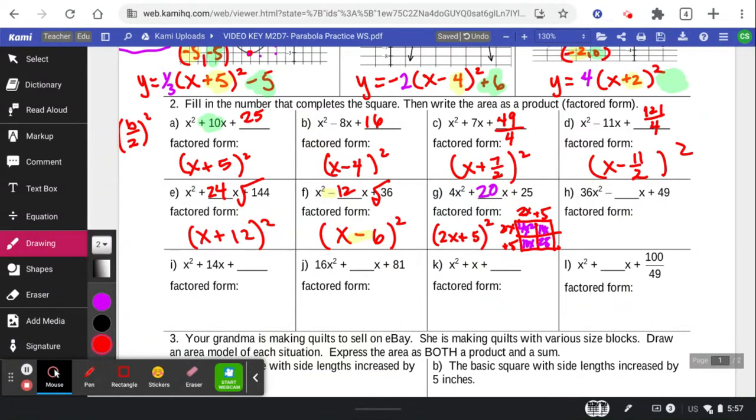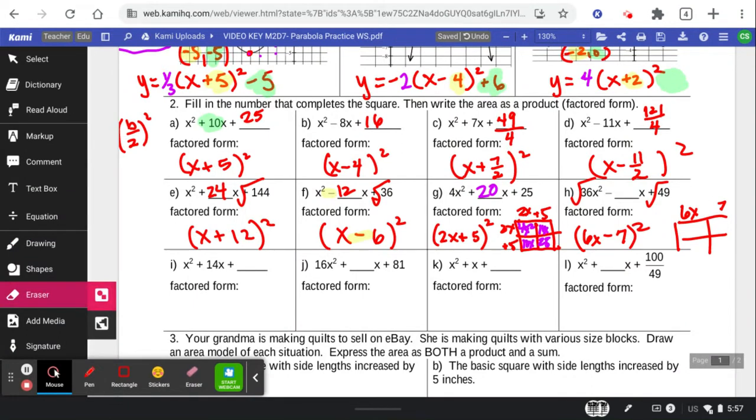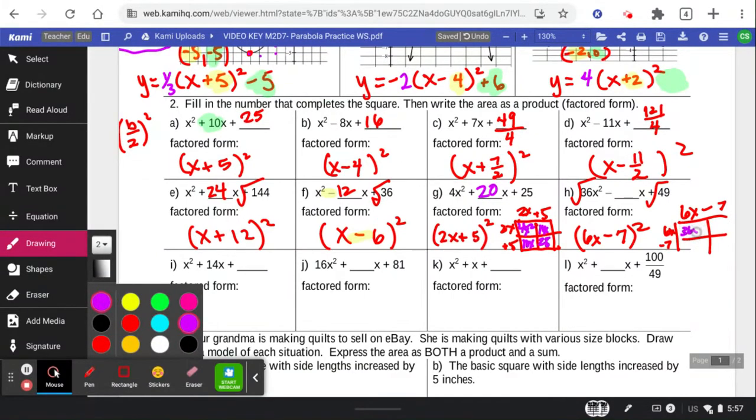Alright, pause the video and try this next one, and then let's see. Did you see this is a 6x and a 7? And so where does that come from? Picture the 6x and the 7. Picture that this gives you the 36x squared and the 49. But what happens over here is a negative 42x and another negative 42x. So we have to combine that into negative 84x. We've got to double that middle term.